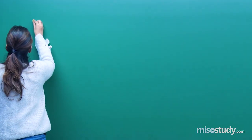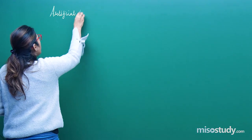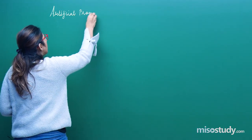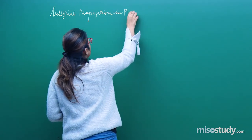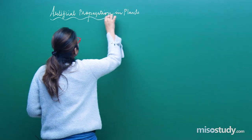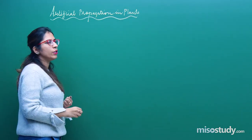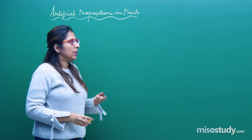Hello students, once again a very warm welcome to MISO study sessions. In today's class, I will be talking about artificial propagation in plants. Propagation is the growth of a new plant from an original parent plant. When it is done by methods developed by man, that is called artificial propagation.